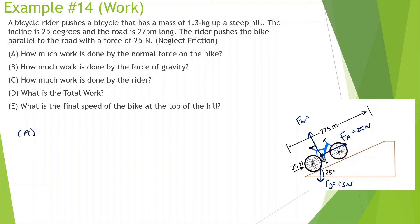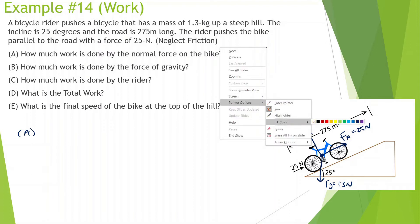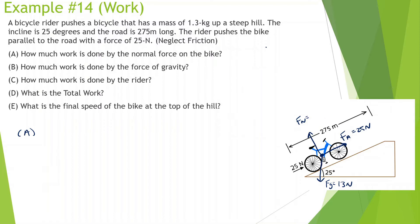How much work is done by the normal force? We don't exactly know what the normal force is, but another thing we should know is the displacement is going 275 meters up the hill. This means it's at a 90 degree angle with the normal force. So it doesn't matter what the normal force is — cosine of 90 is equal to 0, so the work done by the normal force is going to be 0 no matter what.